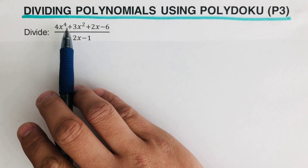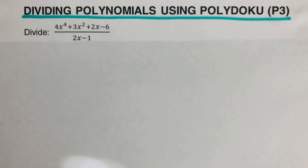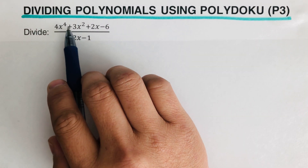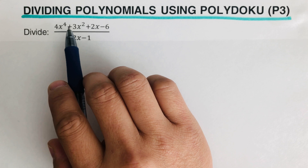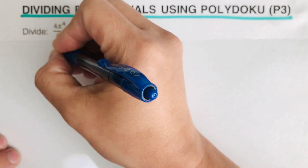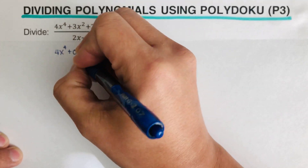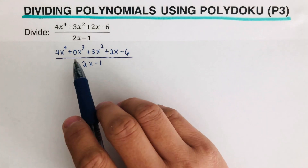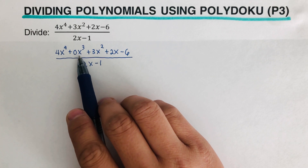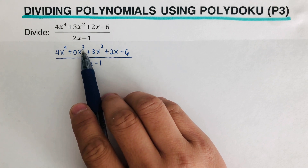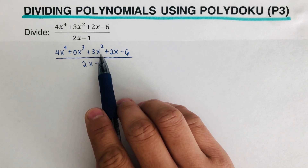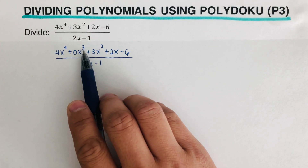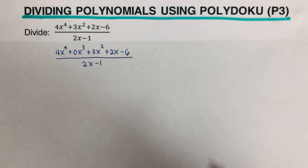Notice that there is no x-cubed term. In order to divide polynomials, it has to have a complete set of exponents. Since there is no x to the third power, we are going to insert 0x to the third. Whenever we set up an expression and it's missing an exponent, we put a 0x to the power of that missing exponent.